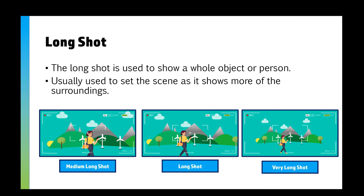The long shot shows usually a whole object or a whole person, and we generally use this to set the scene. You can see the surroundings and what's going on, as well as seeing the whole object in some amount of detail.